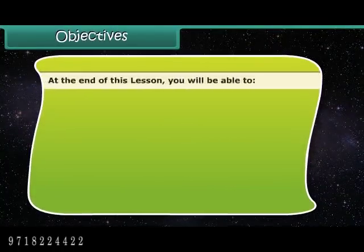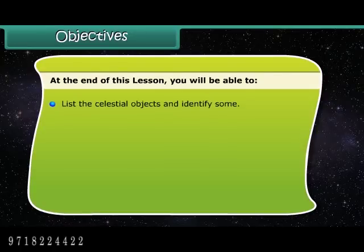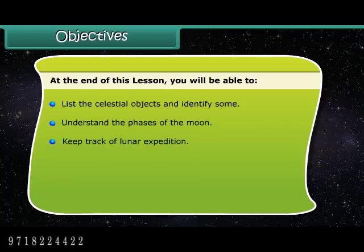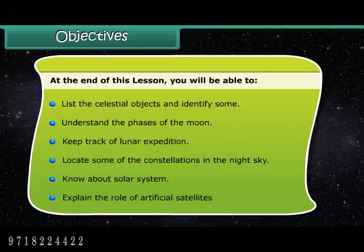At the end of this lesson, you will be able to: list the celestial objects and identify some; understand the phases of the Moon; keep track of lunar expeditions; locate some of the constellations in the night sky; know about the solar system; and explain the role of artificial satellites.